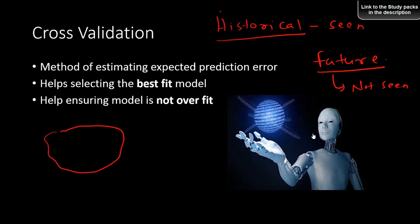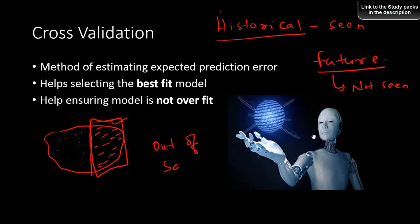In order to ensure that the model works on future data, we need to hypothetically create future data out of the historical data. So, we divide the historical data, build the model on one portion, and do not show the second portion to the model. We assume that second portion is very similar to future data. If the model works well there, it is expected to do well in future as well. It could be data from a different time period — out-of-sample or out-of-time data.